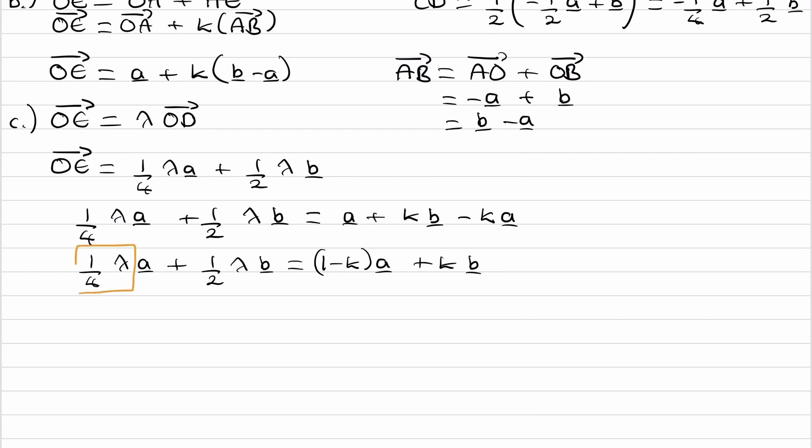So that means a quarter lambda is equal to 1 minus K, and also a half lambda is equal to K. So I can replace the K in this equation with a half lambda, and I end up with a quarter lambda is equal to 1 minus a half lambda. Bring the half lambda to the left, we get three quarters lambda is equal to 1. Lambda is therefore 4 over 3.